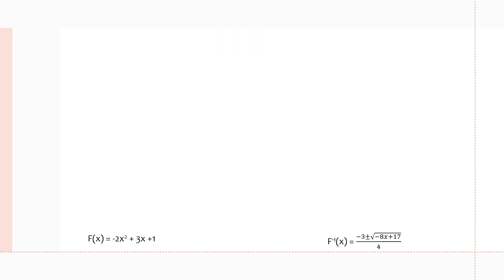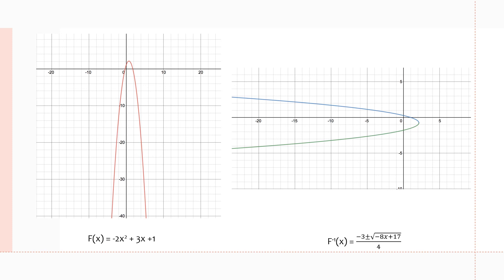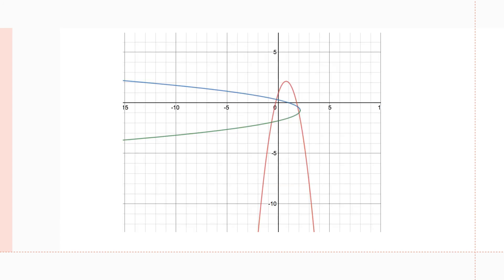The graphs here show the original function and its inverse. This is what the original function looks like, and this is what the inverse looks like. Again, we have the top half and the negative half of the square root represented in two different colors on the inverse. If we put them together, we can see that the inverse is just a reflection on the y = x line.